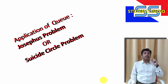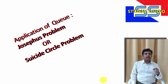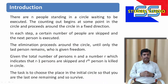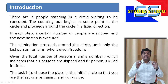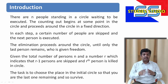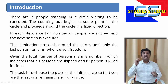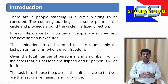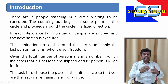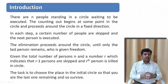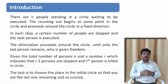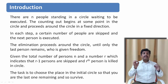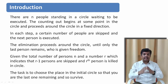Let us discuss the problem statement. There are N people standing in a circle waiting to be executed. The counting begins at a point in the circle and proceeds around in a fixed direction. In each step, a certain number of people are skipped and the next person is executed. The elimination process continues around the circle until only one last person remains, who is given freedom. Given the total number of persons N and a number R — indicating R-1 people to be skipped — the task is to choose the place in the initial circle so that you are the last person to survive.